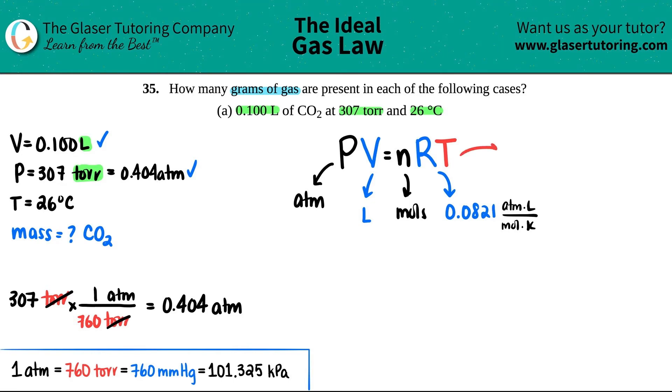And now what's the temperature gonna be? Definitely Kelvin, but they gave it to us in degrees Celsius. How do we go from Celsius to Kelvin? All you got to do is just plus 273. So 273 plus 26, I get 299 Kelvin.